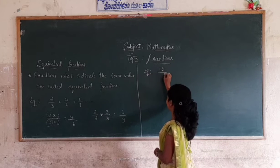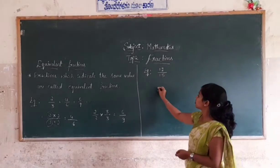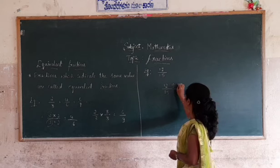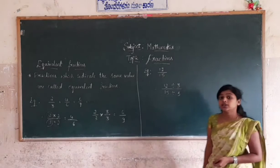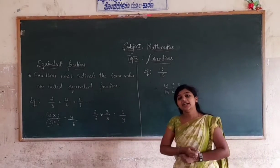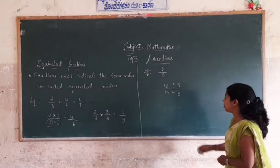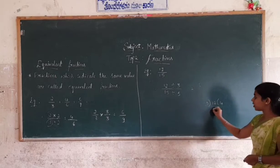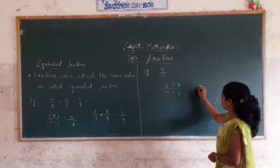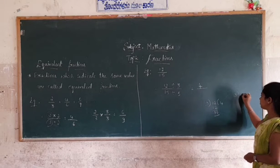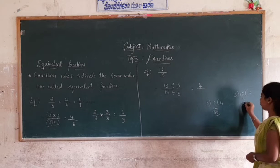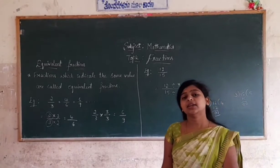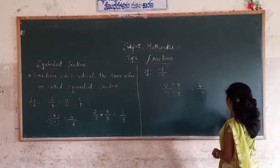Another example: 5/15. To find the equivalent fraction, you may also divide both numerator and denominator by the same number. Divide 5 by 3 — wait, divide 15 by 3. Since 3 × 5 = 15, dividing gives the equivalent fraction.